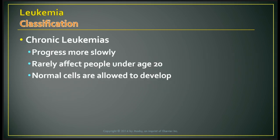In chronic leukemias, the patient's health may not be as severely affected until advanced stages, as normal cells may still develop. These progress more slowly and rarely affect anyone under age 20, still allowing normal cells to develop because of the slow progression.